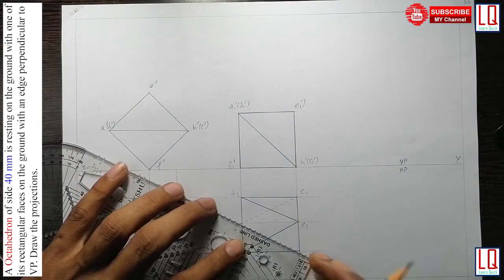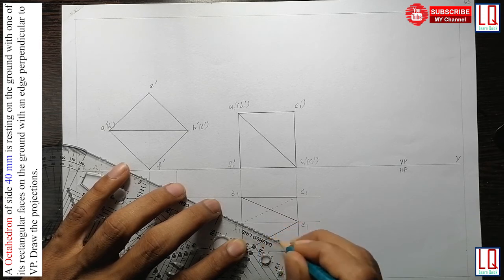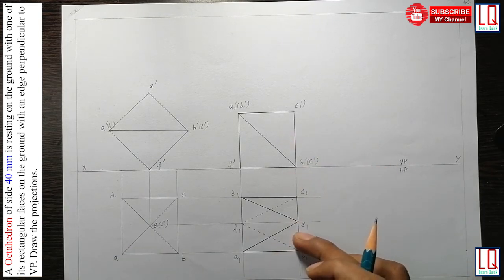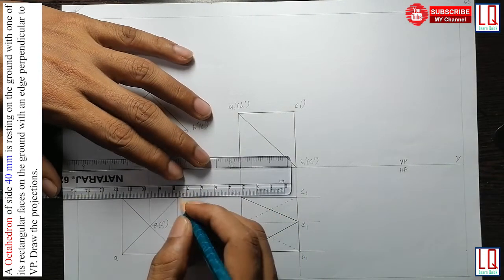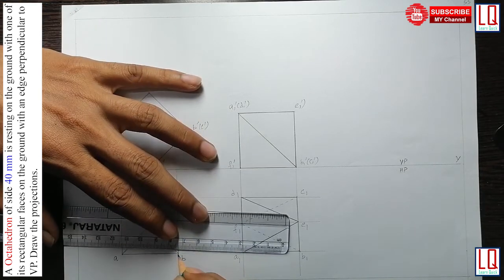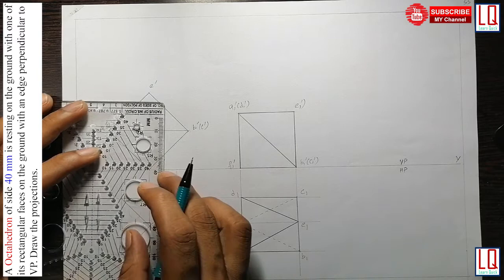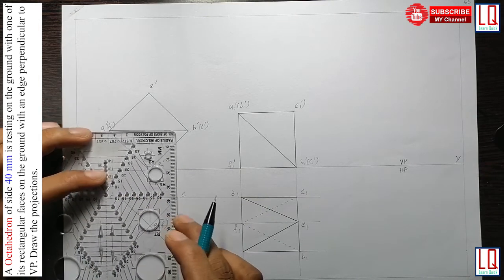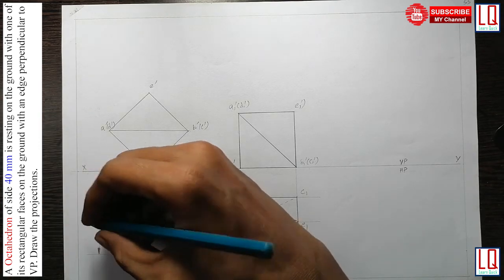Similarly, draw the hidden line for F to B. We have now completed the front view and top view of the octahedron resting on the HP with triangular face F, B, C. Now we will quickly dimension the octahedron with linear dimensioning for the side length. Use an engineering template to make arrowheads, ensuring the ratio is 1:3, and write the side length as 40mm.